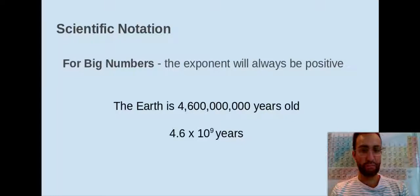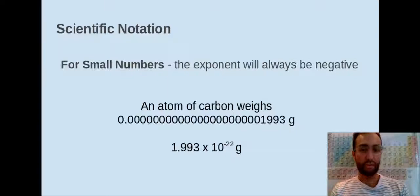If I have a small number, the exponent will always be negative. This is a number that is less than zero. Notice all the zeros that are occurring here — I don't want to have to write all of them. So we can write it in scientific notation: 1.993 times 10 to the negative 22nd grams. Really small number and negative exponent.